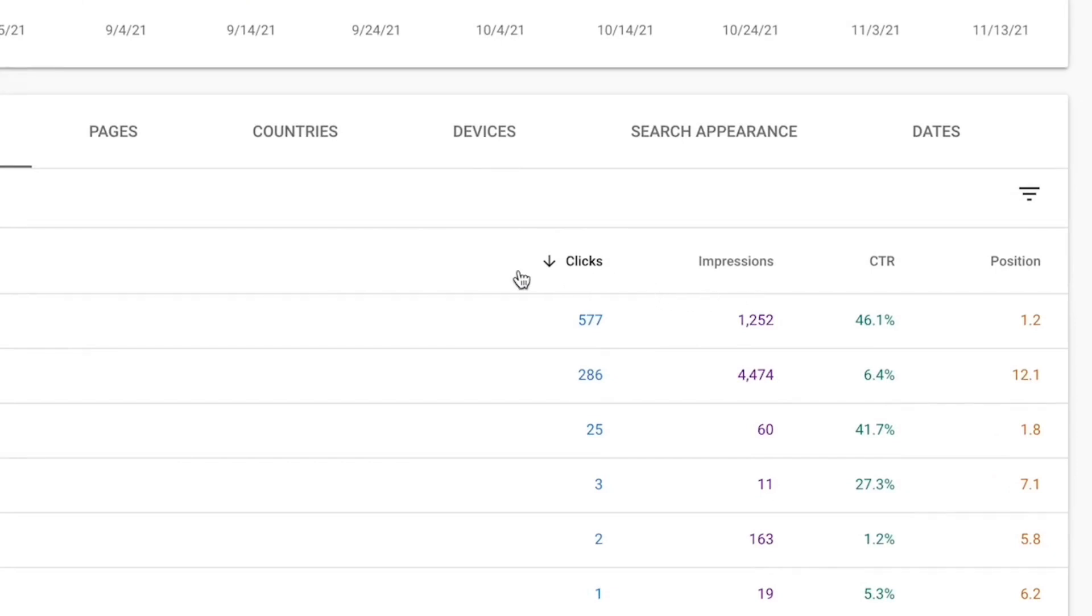Clicks are how many times a searcher clicked on your website's results in the SERPs. The click-through rate is the percentage of people who saw your listing and then clicked on it. The average position is where your site ranks in the search result. Position one is the top position.